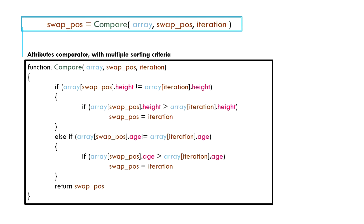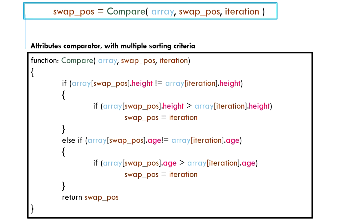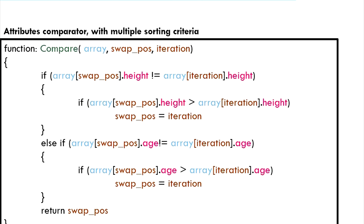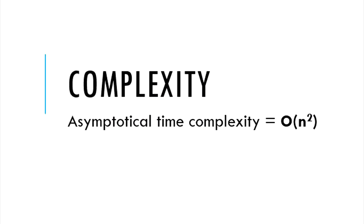We have kept this algorithm generic with no implementation of a compare function. An ascending comparator, for example, would look like this. A descending comparator would look like this, the difference being the change of a greater-than operation to a less-than operation. If we were to compare various attributes of the elements, like we saw in the introduction to sorting video, our comparator would look like this. The asymptotical time complexity of selection sort is exactly the same as bubble sort — that is, order of n-squared.